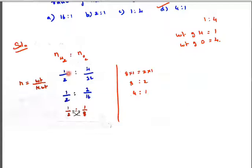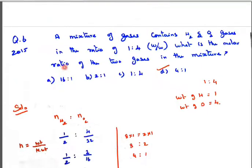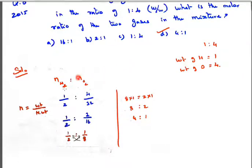We need to find the number of moles using: moles = weight divided by molecular weight. The weight of hydrogen is 1 and oxygen is 4 as given. The molecular weight of hydrogen is 2, and the molecular weight of oxygen is 32 (2 × 16 = 32). So the molar ratio is 1/2 : 4/32.